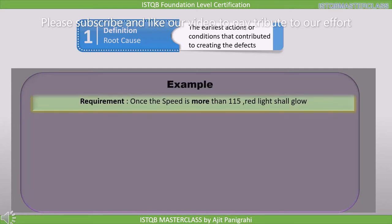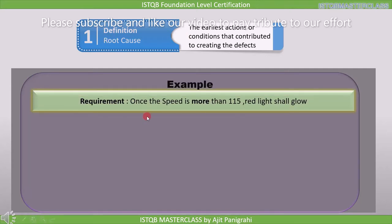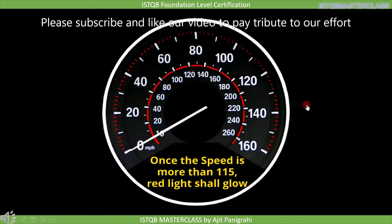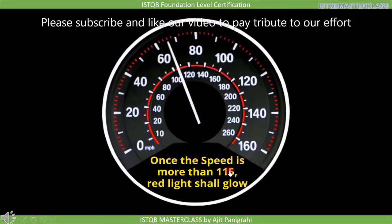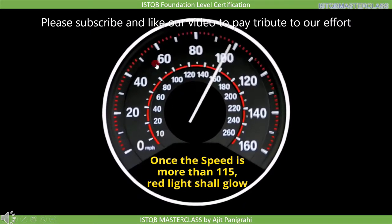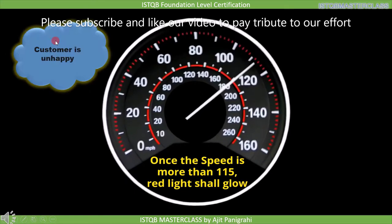Suppose this is the requirement: once the speed is more than 115 km per hour, the red light shall glow. So here the speed needs to be more than 115 km per hour. After getting this feature, the customer is unhappy.